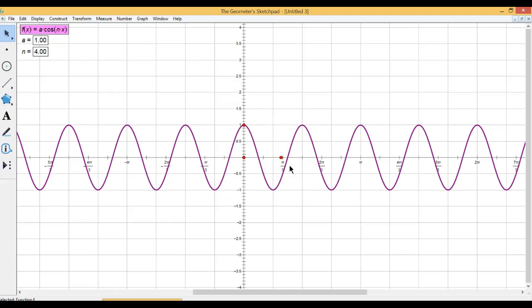Hit enter. Okay, it's exactly the same result. So as we change, the period is still pi on 2. So you can see here, one complete cycle goes to pi on 2.